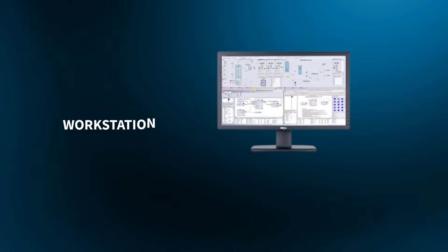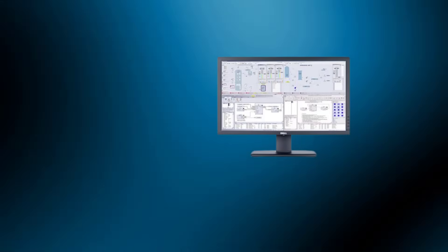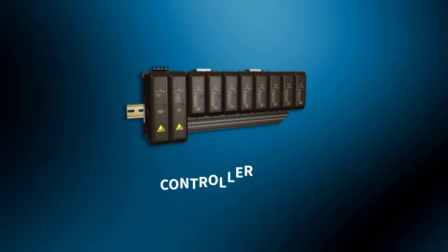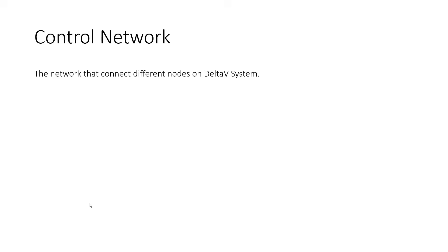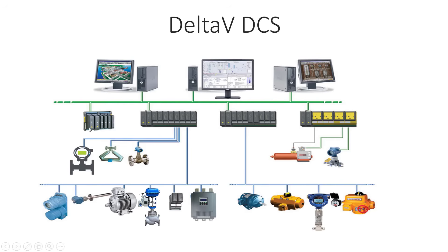Let me explain some key concepts. A Delta V DCS workstation is any computer connected to the Delta V DCS network. A controller is an industrial computer used to program and run the logic that automates the process. The control network connects different nodes on the Delta V system. A node is any device on the Delta V network — whether a workstation or a controller.